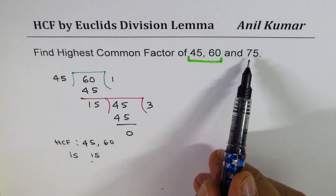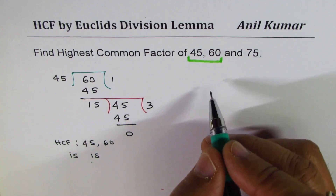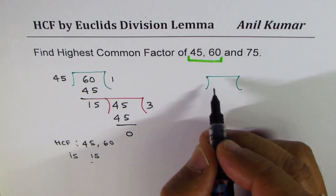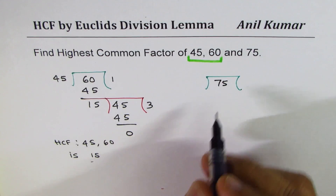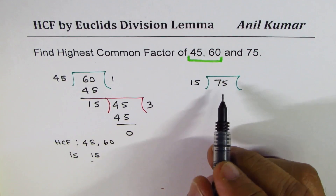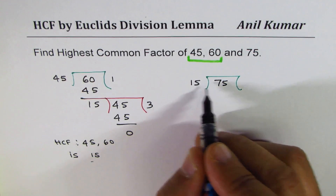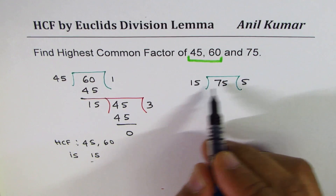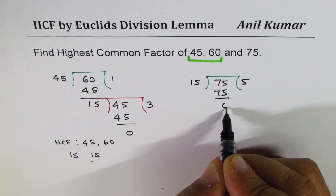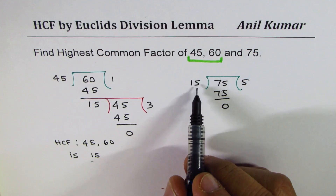We want to find the HCF between all three numbers, so now we'll take this highest common factor of 15 and divide it into 75. We find the highest common factor between 15 and 75 by dividing 75 by 15 — that goes five times, giving us a remainder of 0.